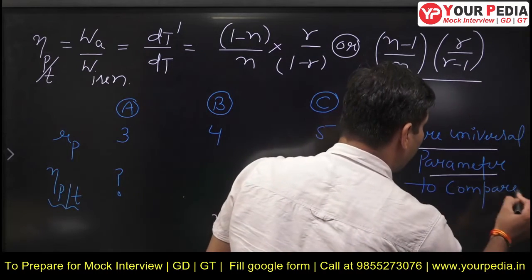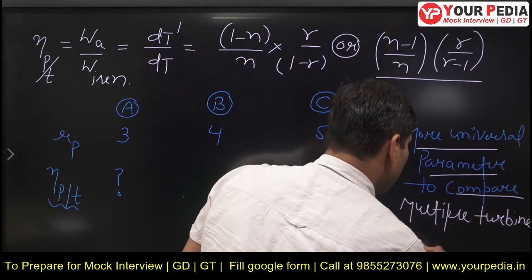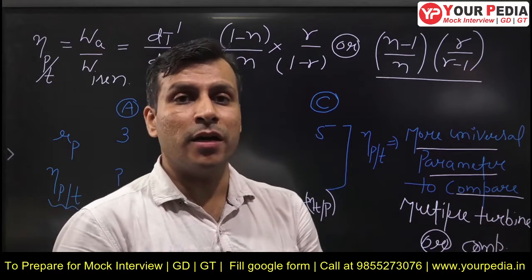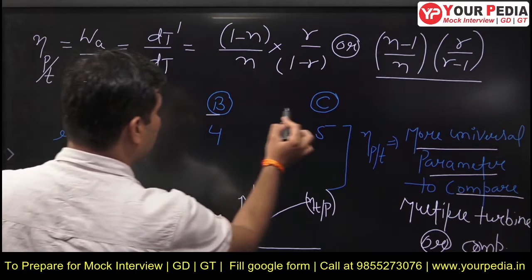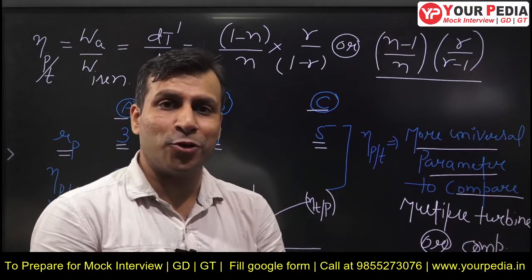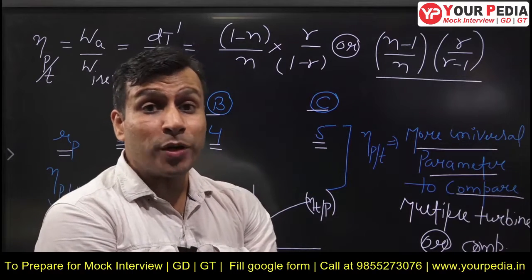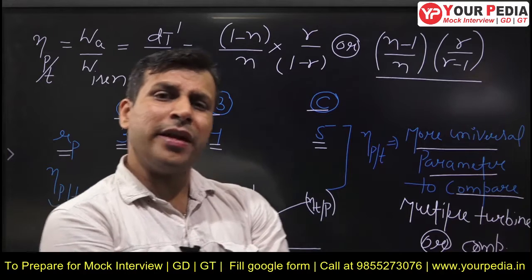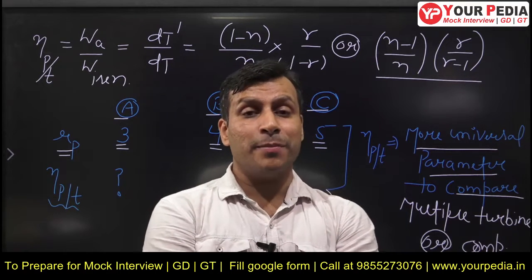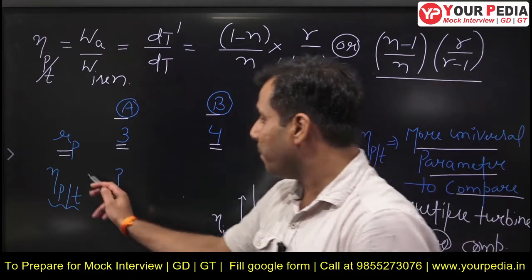This polytropic efficiency is a more universal parameter to compare multiple turbines or compressors. Why? Because this parameter is independent of the initial and final conditions and independent of the pressure ratio. So if you have 3 turbines A, B, C with pressure ratios 3, 4, and 5 respectively, and you find their isentropic efficiencies, you will surely get higher isentropic efficiency for the one with the higher pressure ratio. So you cannot compare these turbines - which have different pressure ratios - using isentropic efficiency. If they have the same pressure ratio, then you can compare using isentropic efficiency.